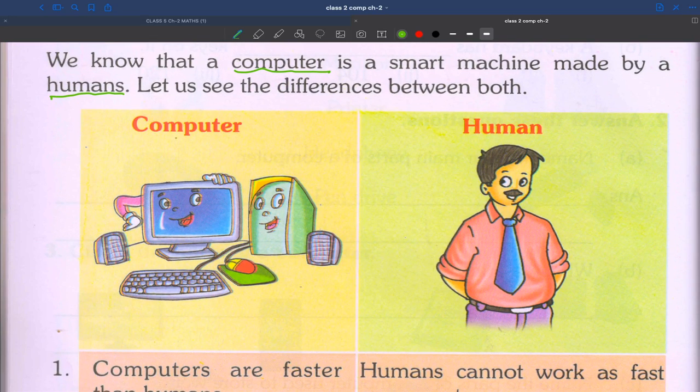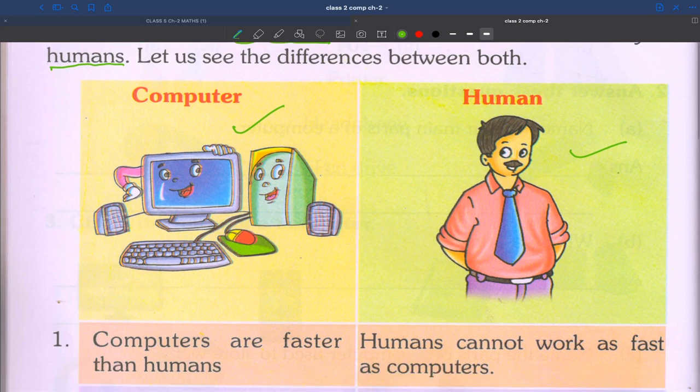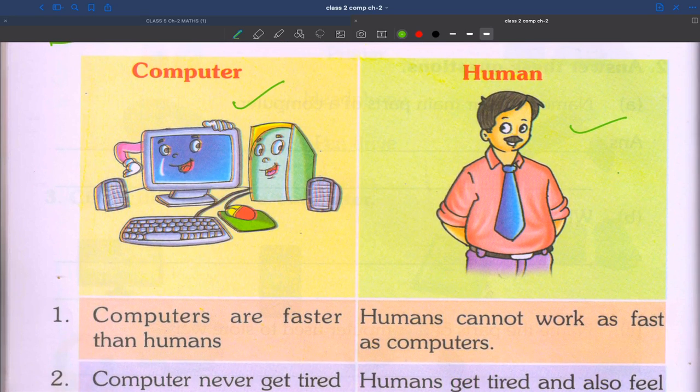First point: computers are faster than humans. Humans cannot work as fast as computers.